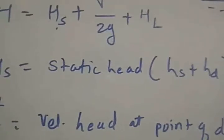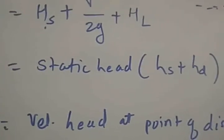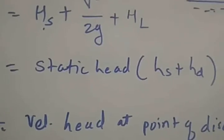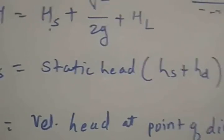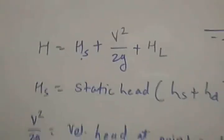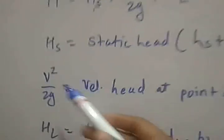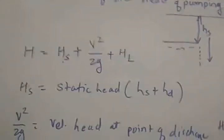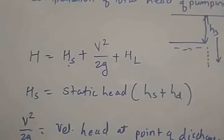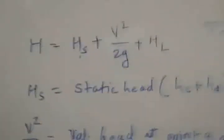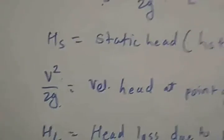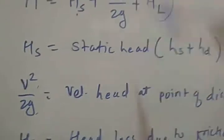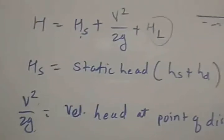Also, if the size of the pipe is changed, the velocity of flow will change, which will in turn change the velocity head. So when pipe size is changed, velocity will change and because of that velocity head will be changed. Static head will change because of the fall in the level of liquid. Changing pipe velocity will ultimately change the head loss due to friction.